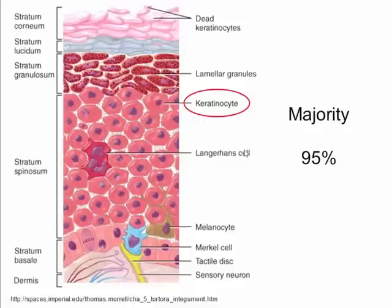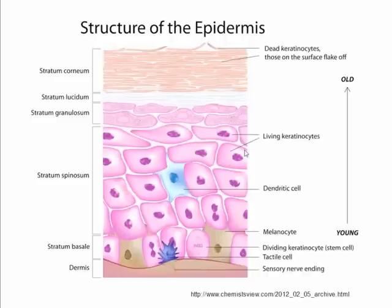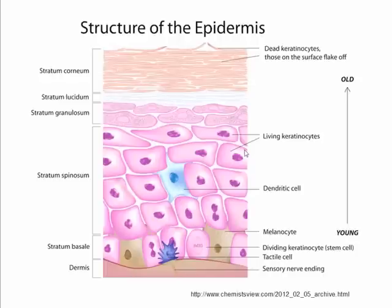The keratinocytes change — they differentiate as they pass upwards through the epidermis. They begin life in the stratum basale, where a keratinocyte stem cell will divide either into another stem cell or into a transit amplifying cell. These cells in the lower levels of the epidermis, the stratum basale and stratum spinosum, are fairly full cuboidal cells and they begin to accumulate intracellular keratin and flatten in their shape.